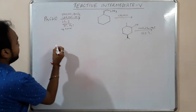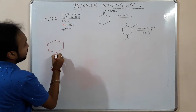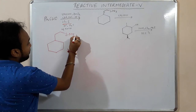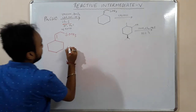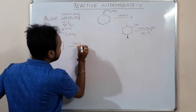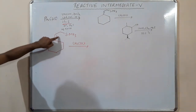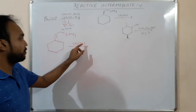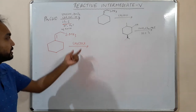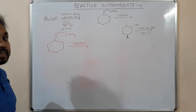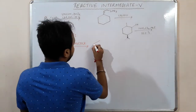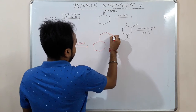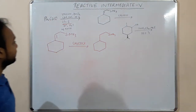The second reaction involves a silicon group with a double bond (allylsilane), and an electrophile like CH3COCl. The pi bond attacks the carbonyl carbon and chloride leaves — it's like a Friedel-Crafts acylation type mechanism.